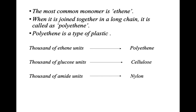The most common monomer is ethene. When ethene units are joined together in a long chain it is called polyethene, which is a type of plastic. When we join thousands of units of glucose we form cellulose, and when we join thousands of units of amide we form nylon.